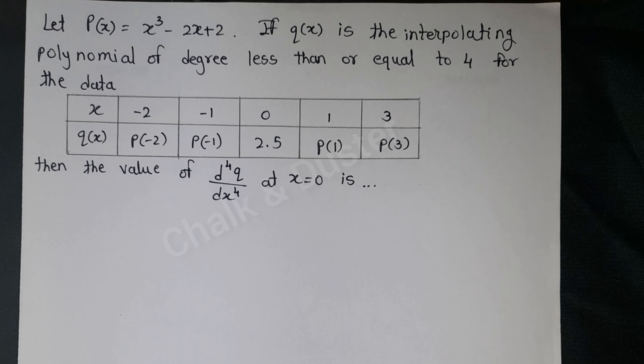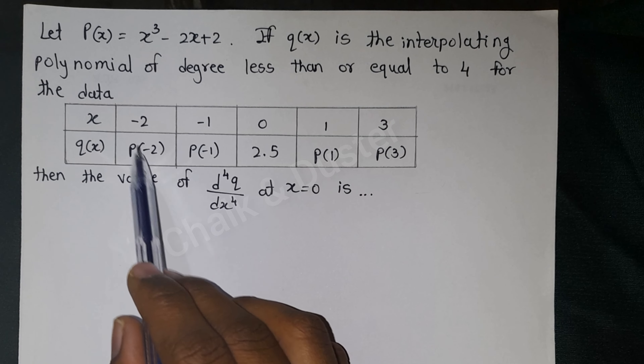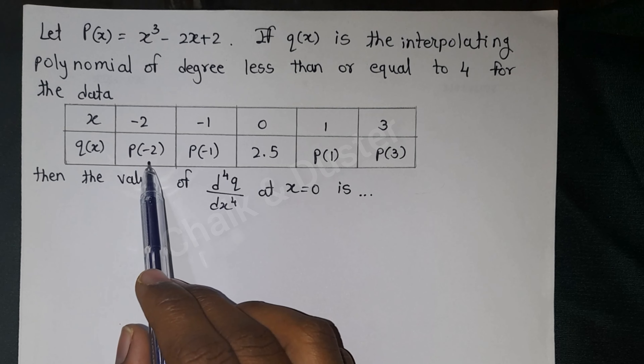If q(x) is the interpolating polynomial of degree less than or equal to 4 for some given data, q(x) is evaluated at the data points. We have to find p(-2), p(-1), p(1), and p(3). We need to find the value of the 4th derivative of q with respect to x at x = 0. Here, 5 nodal points are given.